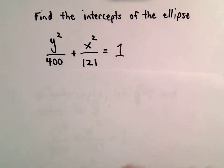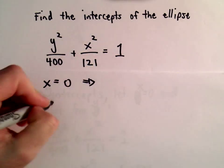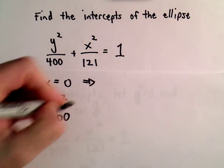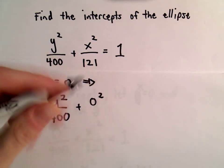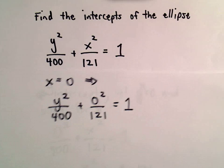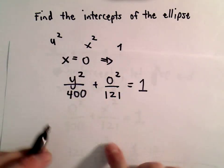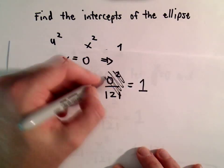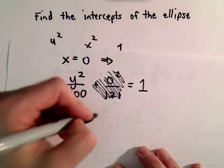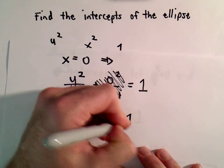So if we let x equal 0, we've got y squared over 400 plus 0 squared over 121 equals 1. Same thing as before — 0 squared over 121 is just 0, so we can essentially ignore it. We're left with y squared over 400 equals 1.